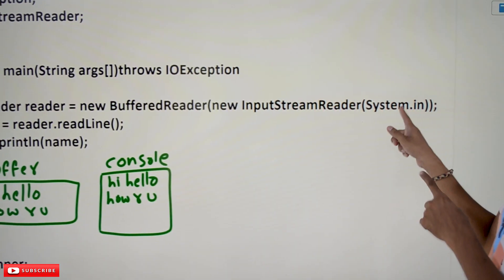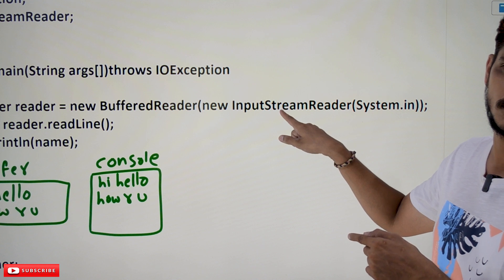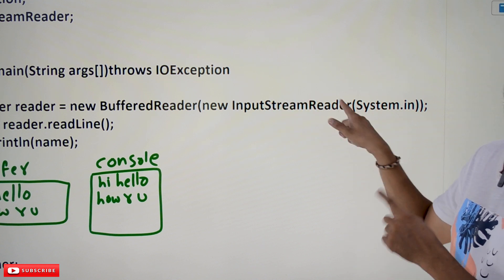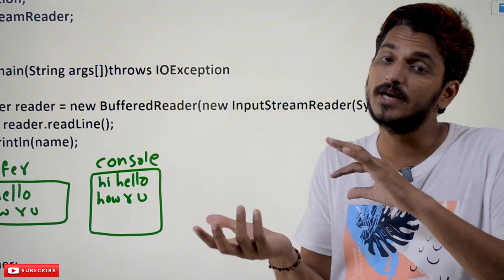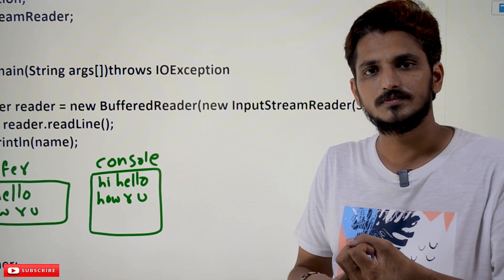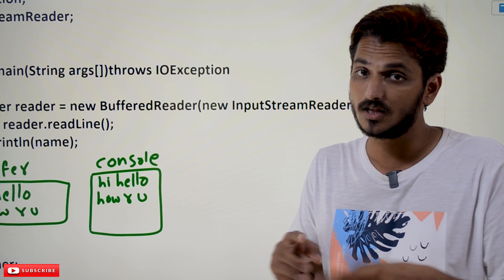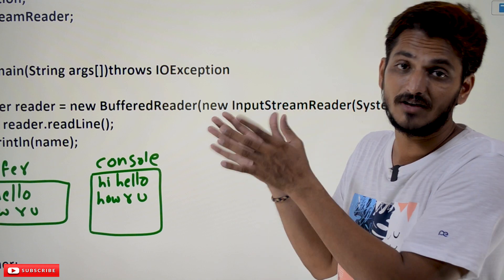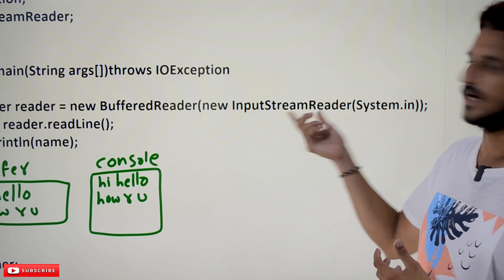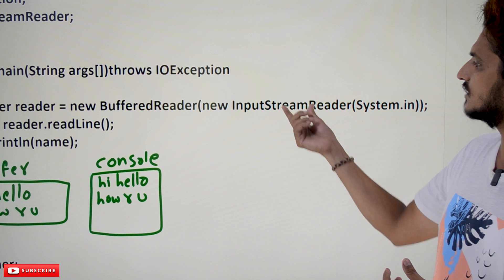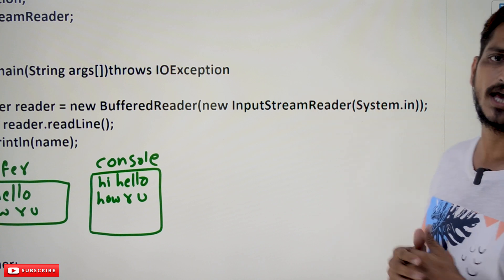In order to convert these bytes — whatever comes from System.in — into characters, the InputStreamReader class has been designed. There are different possibilities to convert bytes to characters, such as ASCII values, Unicode, Unicode-8, Unicode-16. These are the different character sets available. The methods present in InputStreamReader are helpful in converting data into characters. This object is then given as input to the BufferedReader.